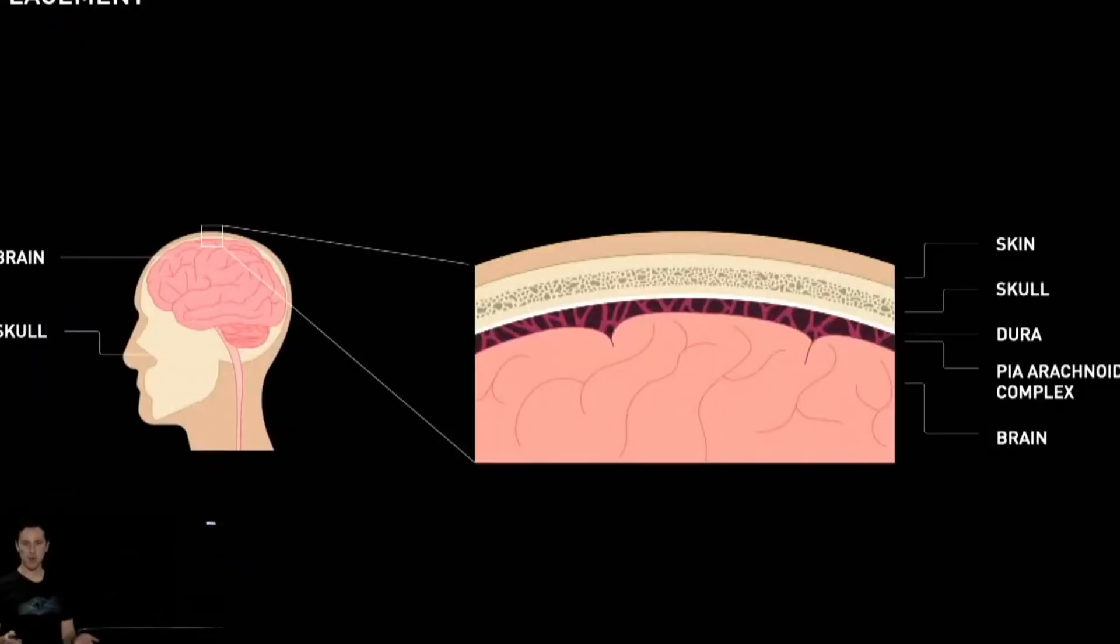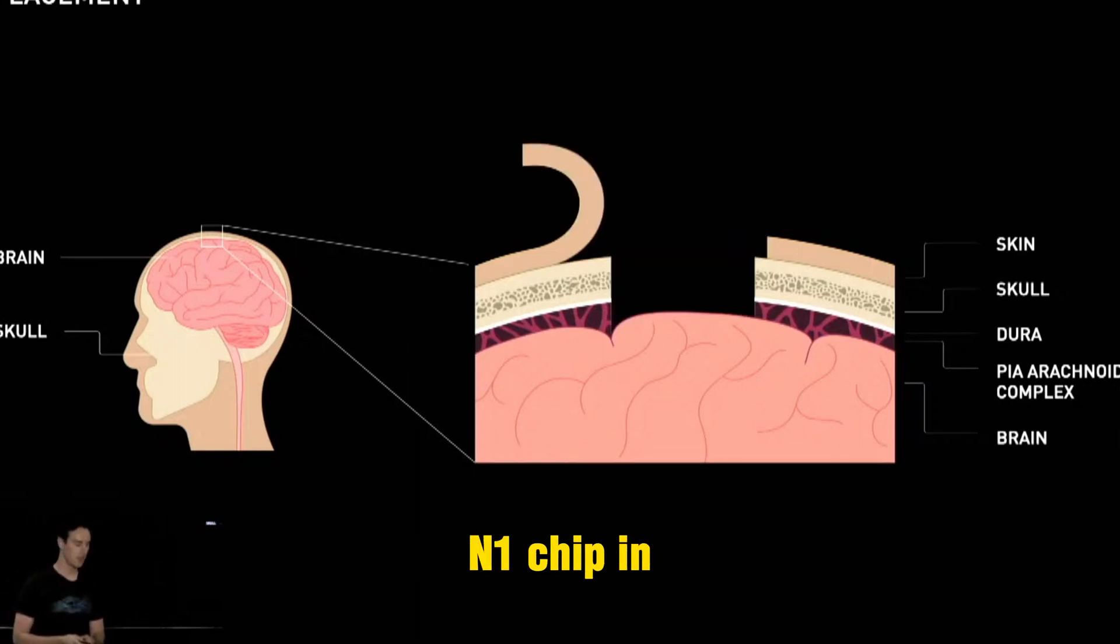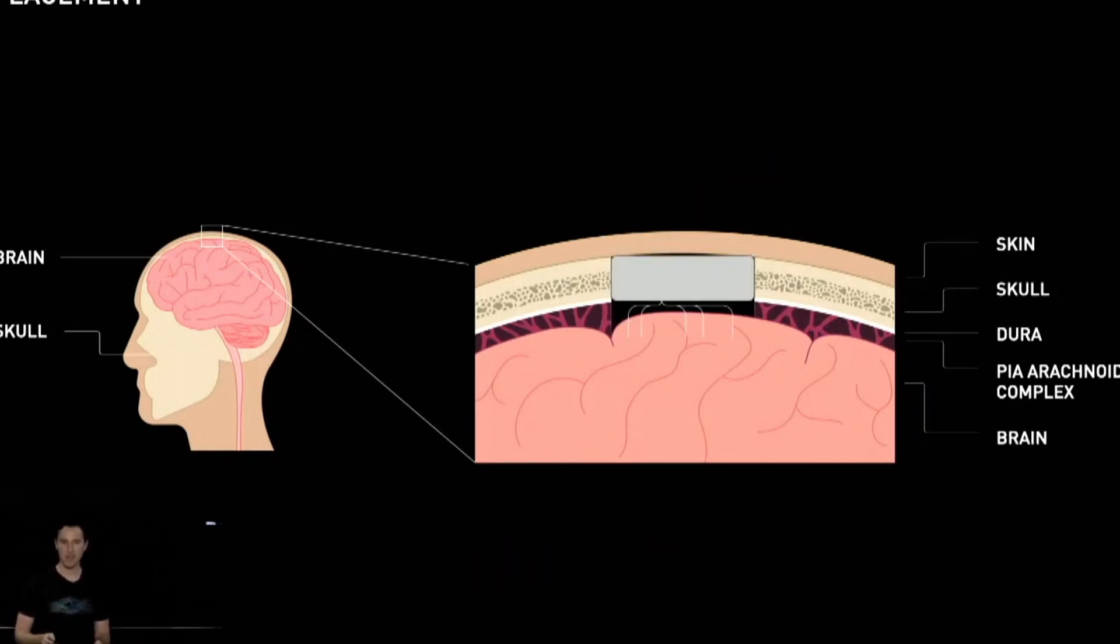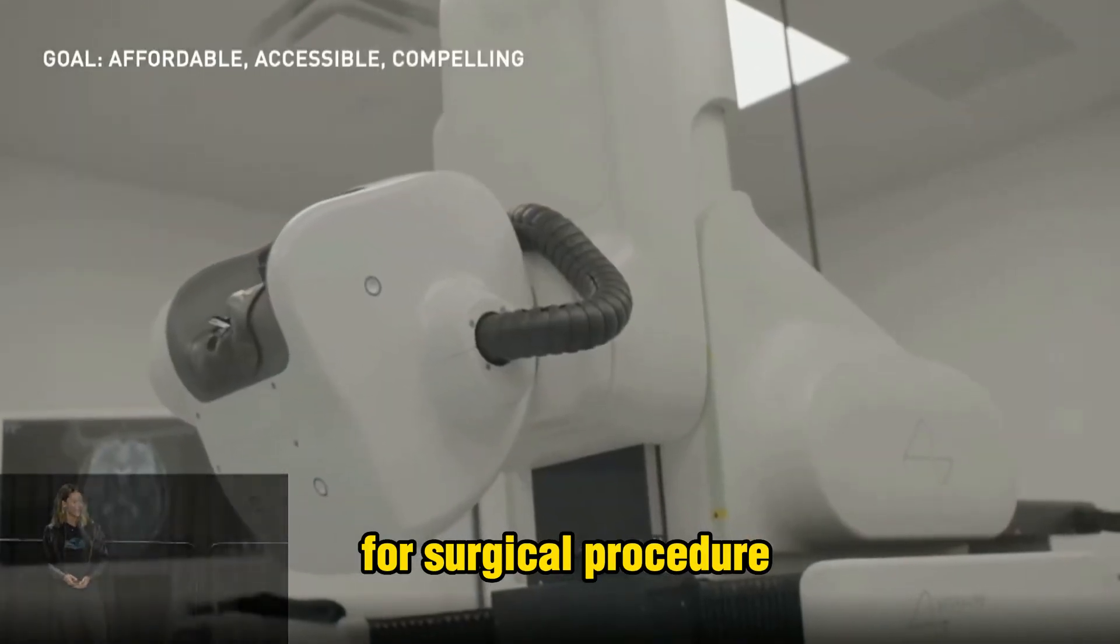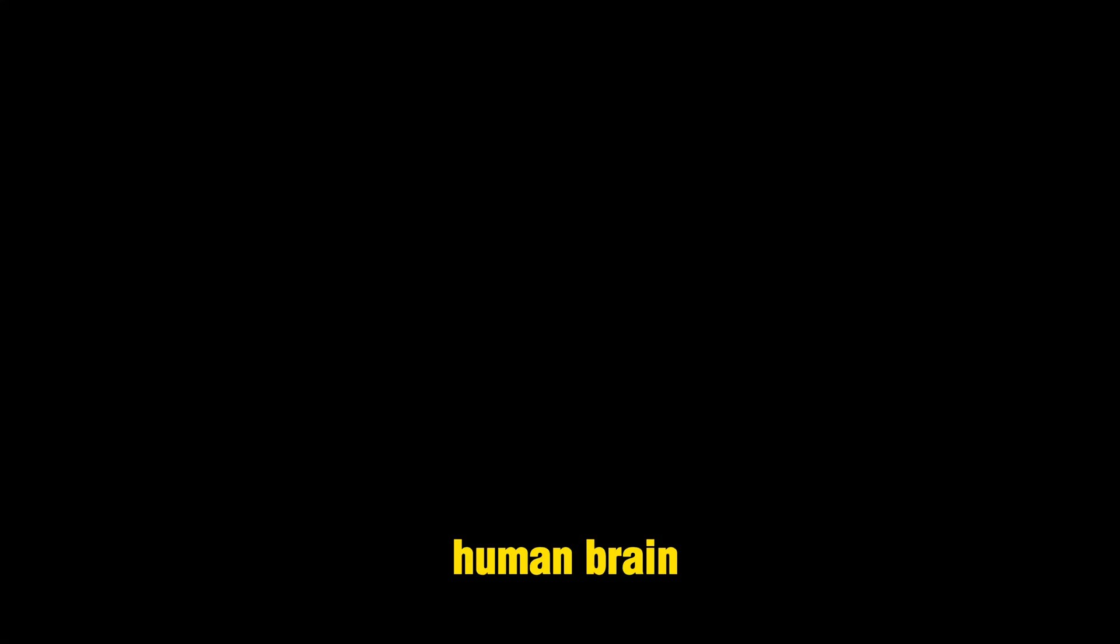The last phase is called human trials. In human trials, they started implanting N1 in human brains. It is very difficult to implant the N1 chip in the human brain, so in that case, we use a robot for the surgical procedure. And that's how Neuralink is implanted in the human brain.